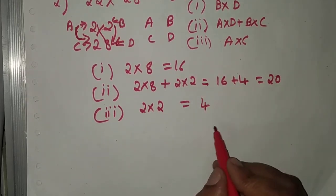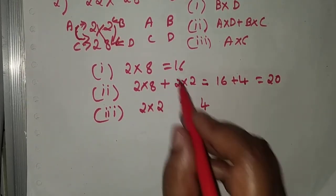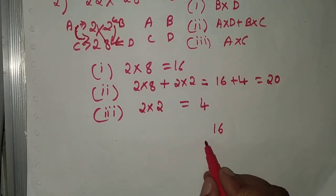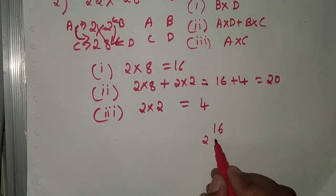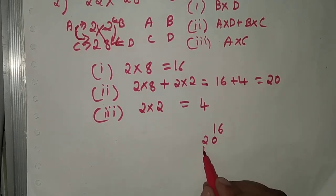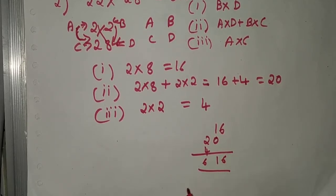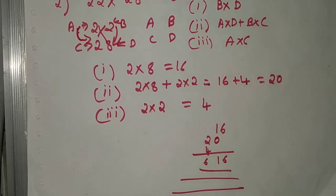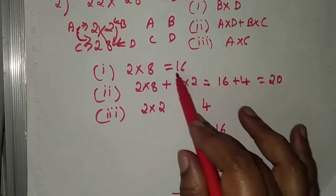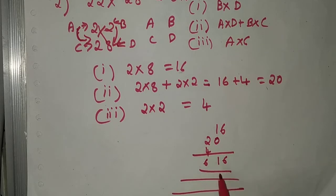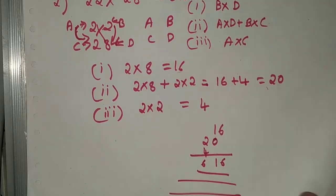Taking all results — 16 first, then 20, then 4 — and adding them in order gives us 6, 1, 6. So 22 into 28 equals 616. That concludes the second problem.